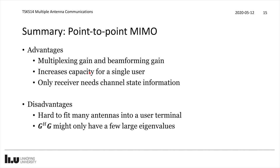Whenever you want to say that our network can have a peak data rate of a particular number, that is based on using the ideal type of point-to-point MIMO — the largest multiplexing gain supported in the network, the largest modulation format, assigning all bandwidth to a single user. Another advantage is that you only need channel state information at the receiver side. The transmitter doesn't need to know the channel — it can spread out the signal in different directions, and then the receiver will process the received signal to decode all of the different data streams.